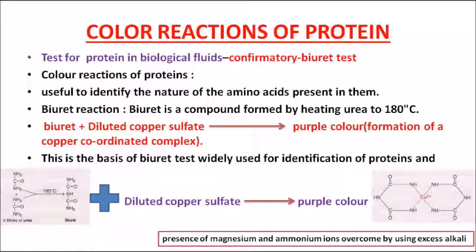Another important MCQ topic is color reactions of protein — specifically how to test for protein. The confirmatory test for protein is the biuret test. When two moles of urea are heated, you get the compound biuret. When biuret is added to diluted copper sulfate, if the substance contains protein, it gives a purple color. This purple color indicates the formation of a copper-coordinated complex, confirming the presence of protein.